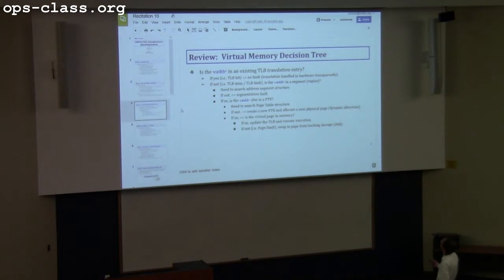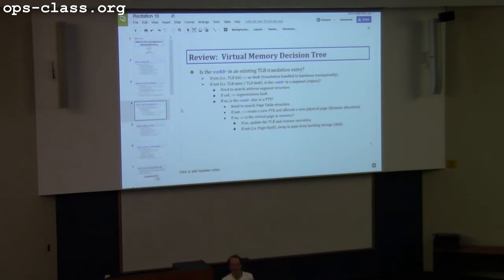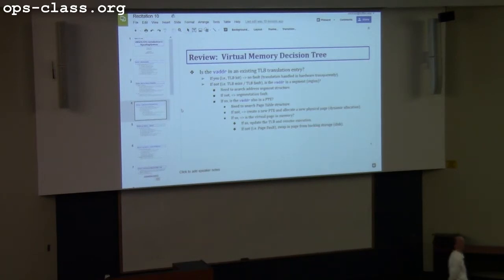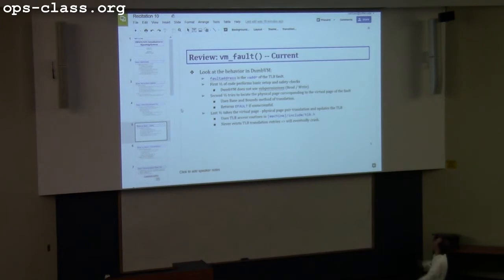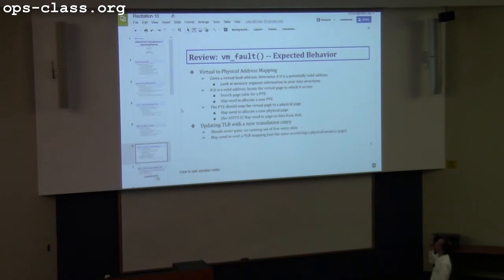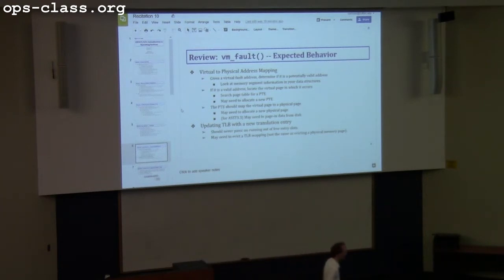More on memory segments: we talked about the three static segments, the stack and the heap, and how to set those up. We also talked about what happens with faults — when you have a TLB fault, and what you need to do in VM fault for assignment 3.2. This is going to need to change, because if there is a virtual page that exists but its data is not in memory, we'll have to expand VM fault to do the swapping-in algorithm, which is directly relevant to assignment 3.3.